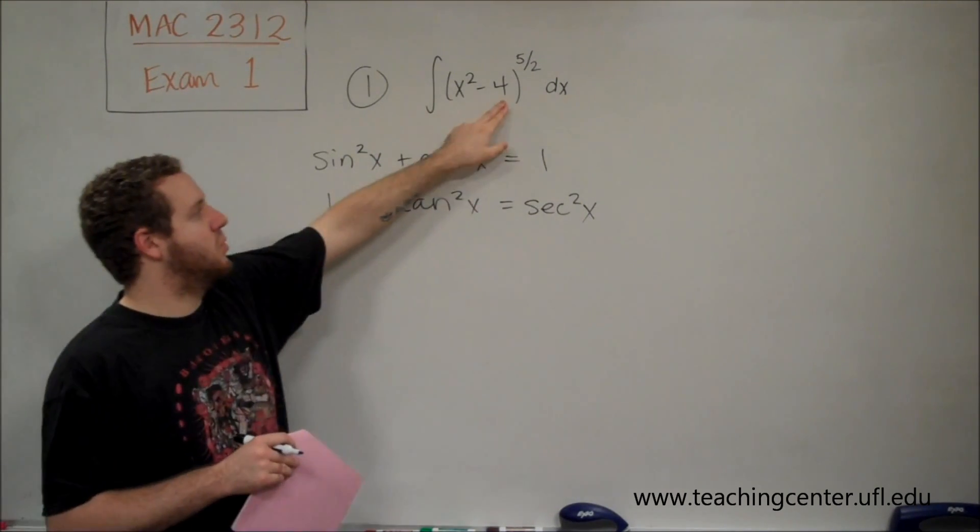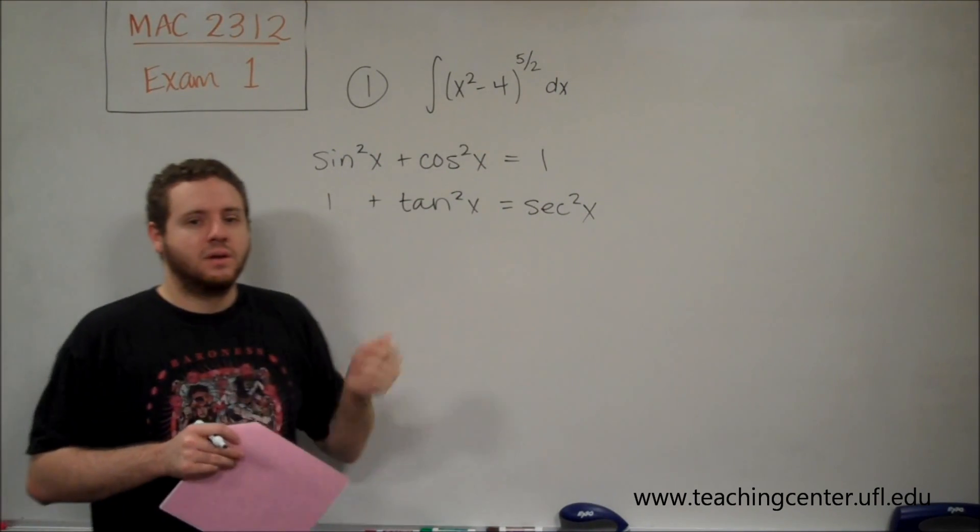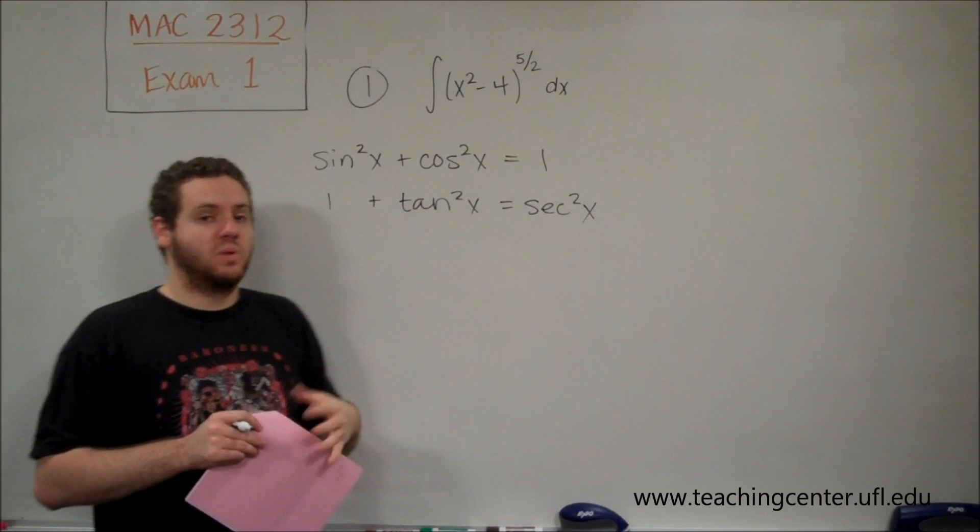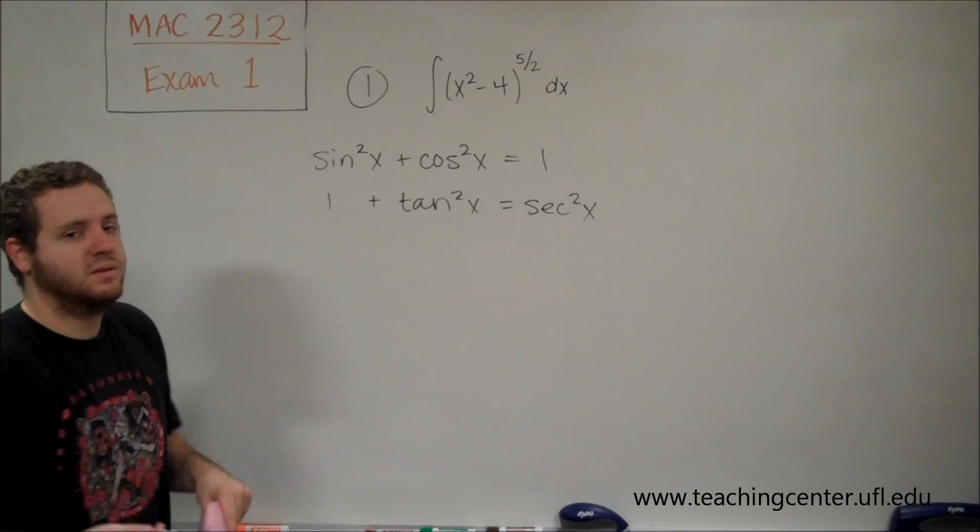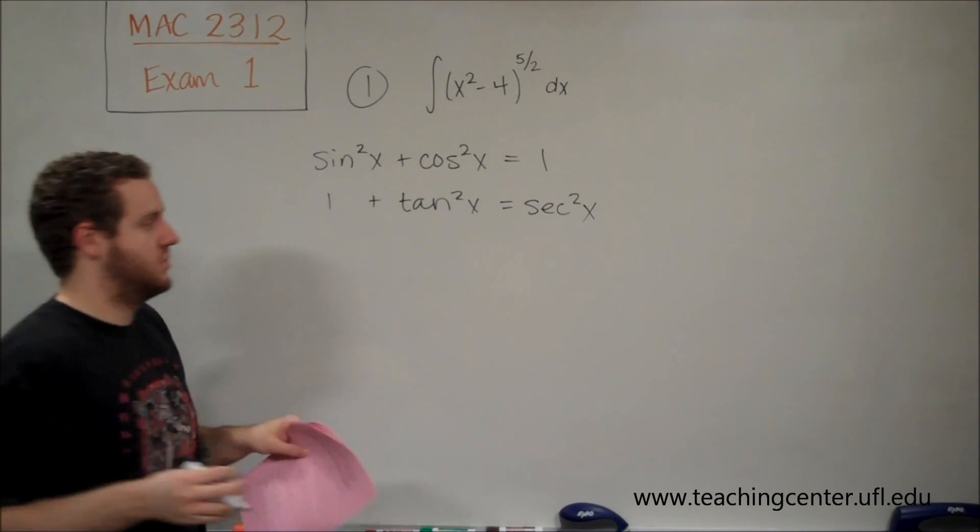Now recall, since there's a 4 here instead of a 1, we're going to have to do something with that as well. But you can see the only way that we can get a trig function minus a constant, or the easiest way we can get that, not the only way,